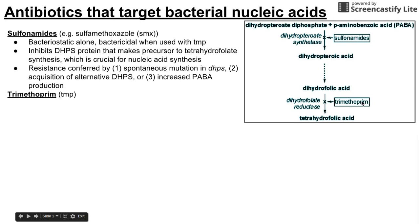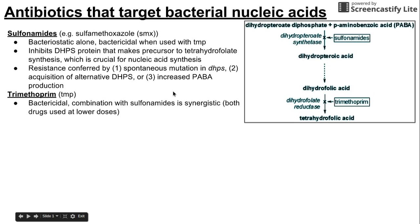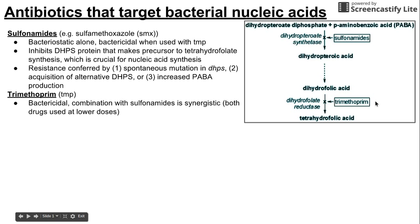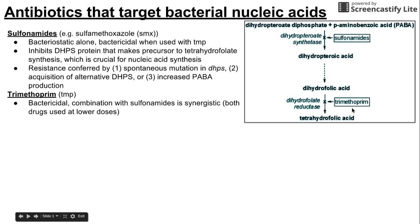The second group, as mentioned, is trimethoprim, abbreviated TMP. It's bactericidal, and when used together with sulfonamides the effects are synergistic. This means that both drugs can be used at a lower concentration than what you would normally have to use if you used them individually. So these two, acting in the same pathway, are synergistic together.